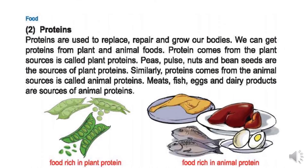Then we have proteins. Proteins are used to replace, repair and grow our bodies. We can get proteins from plant and animal foods. Protein from plant sources is called plant protein — peas, nuts and bean seeds are sources. Similarly, protein from animal sources is called animal protein — meats, fish, egg and dairy products are sources of animal proteins.